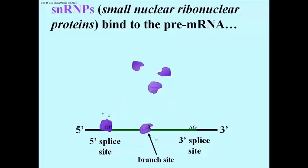First, SNRNP U1 and U2 bind to the 5' splice site and to the adenine at the branch site, respectively.